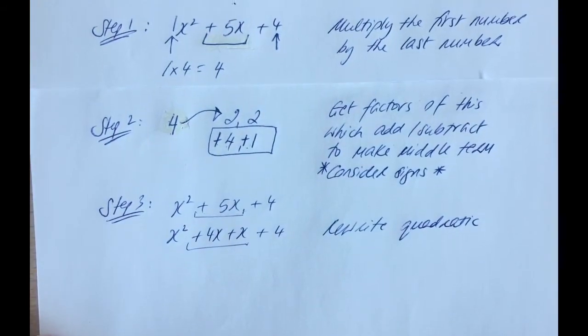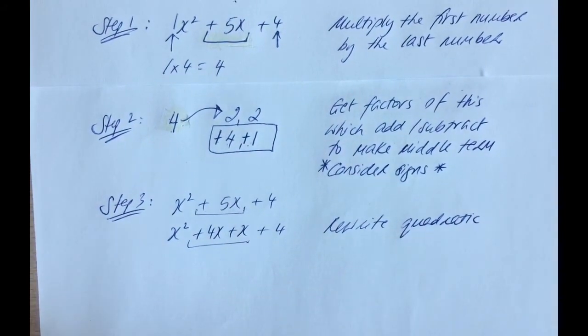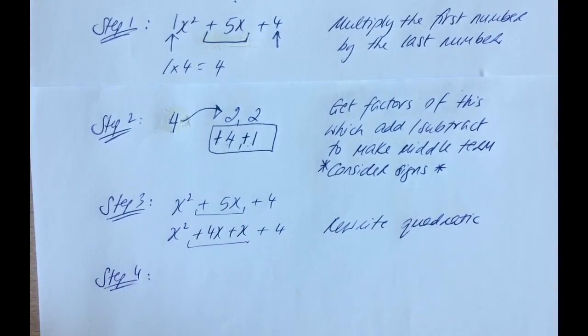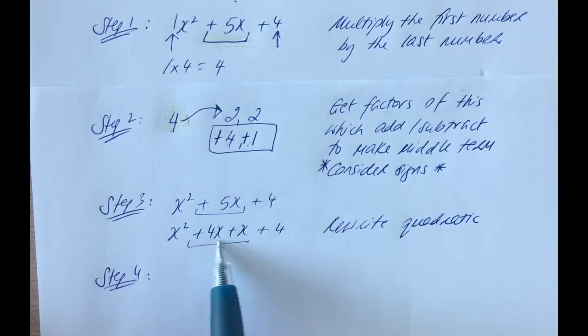What we do when we rewrite our quadratic is we can move on to step 4, which is now factorizing. Just as you would your grouped common terms.